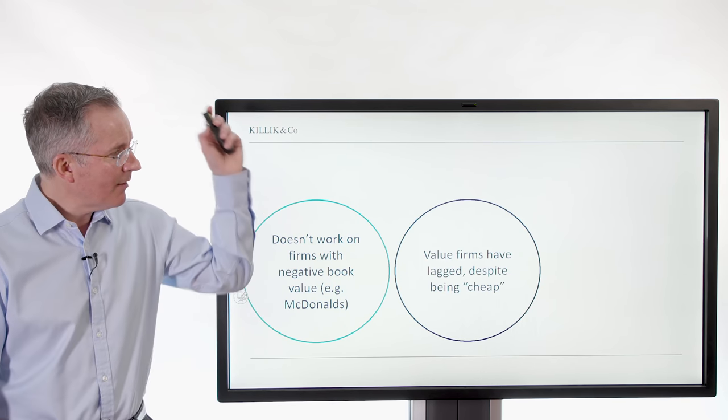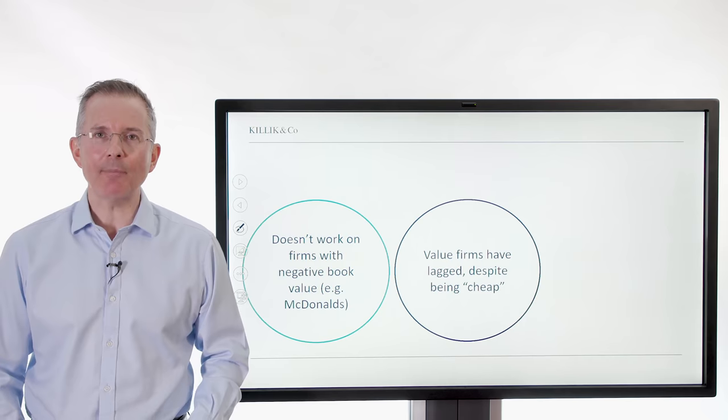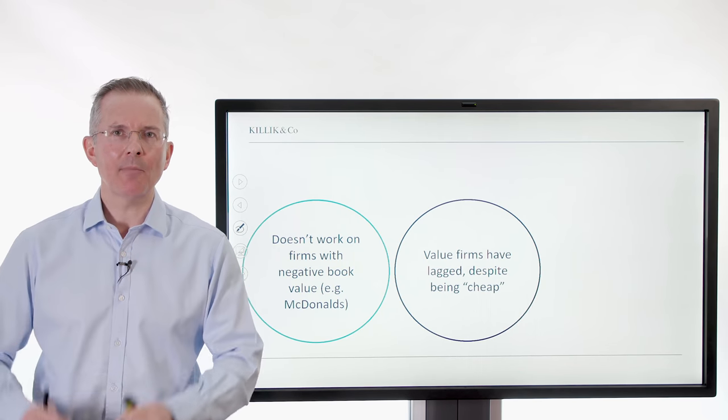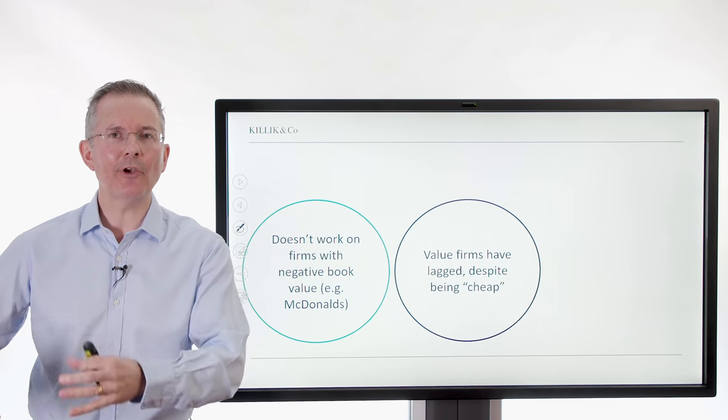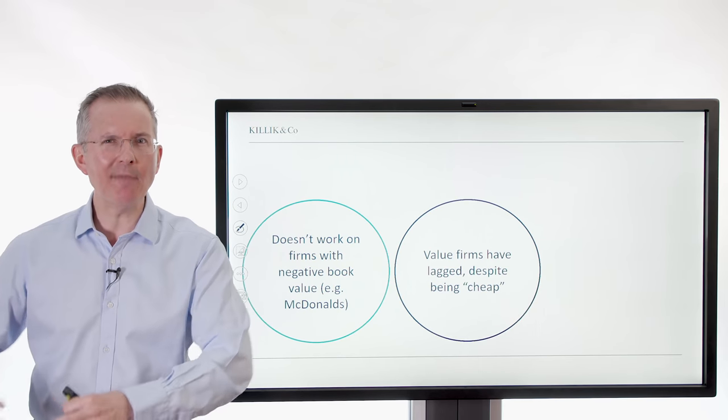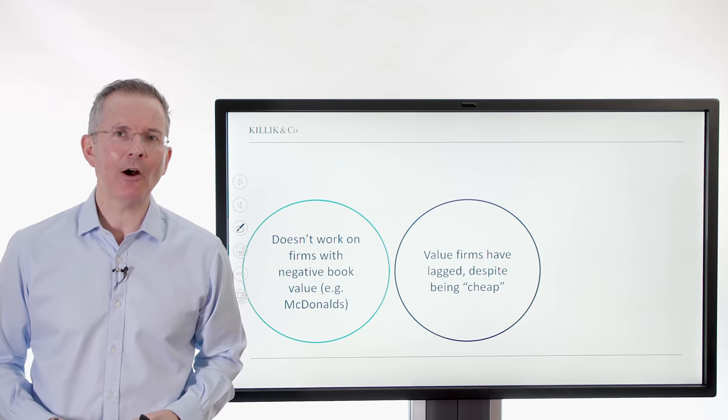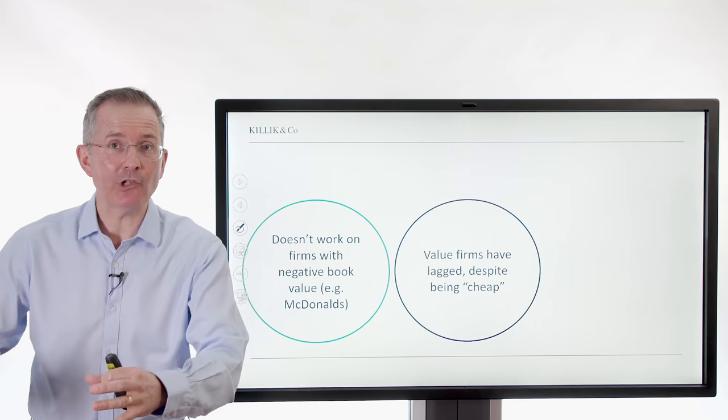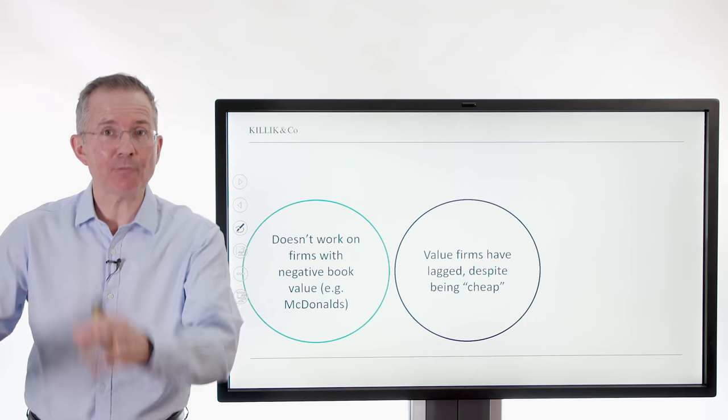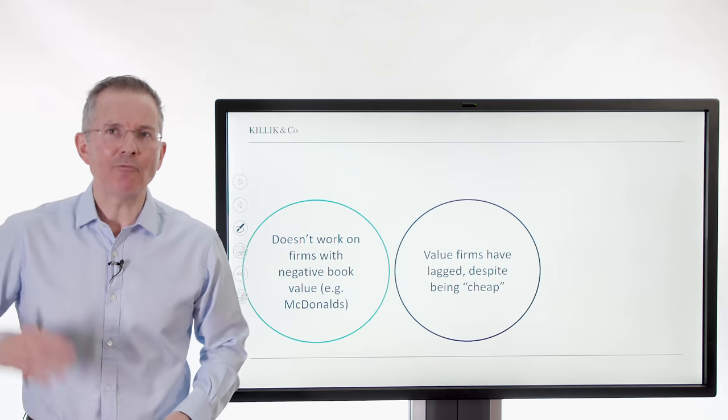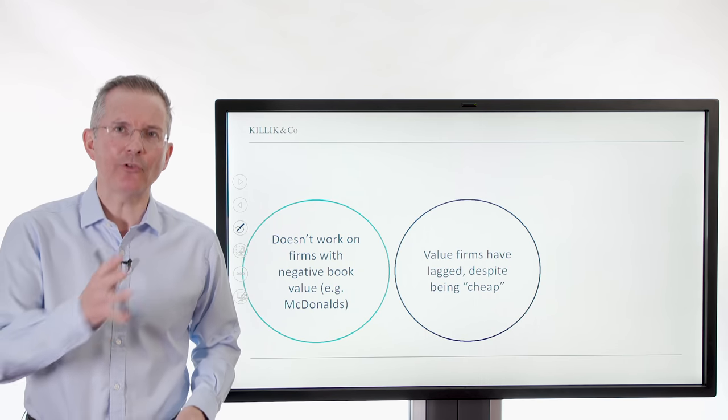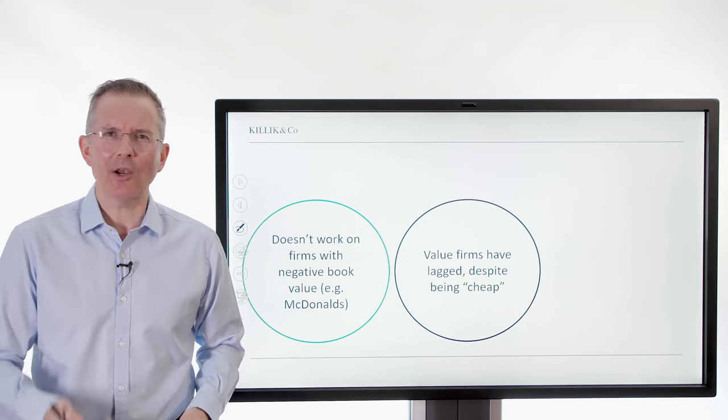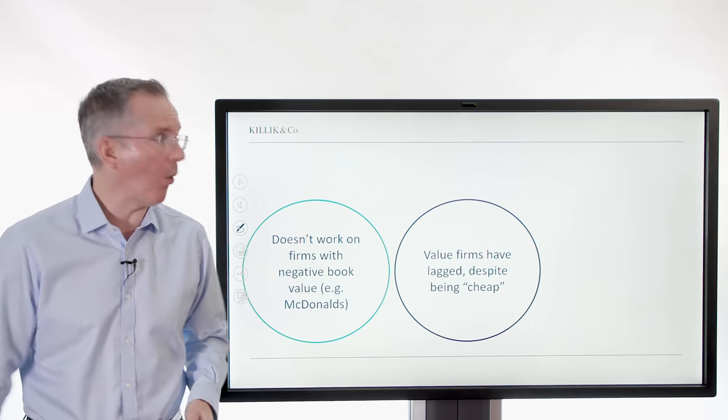There's another problem. Value firms have lagged despite being cheap. So looking across the wider market, people say value's going to return, as opposed to growth. The time for value stocks. But they've been saying that for some time and value stocks have looked cheap depending on which metric you use, depending on what benchmark you use. And yet they haven't really delivered the performance that would suggest. So critics are saying what's going on, is the basic message here flawed?